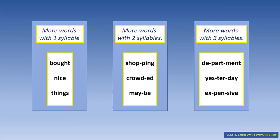Let's read some more words. One syllable — repeat after me: bought, nice, things. Two syllables — repeat after me: shopping, crowded, maybe. Three syllables — repeat after me: department, yesterday, expensive.